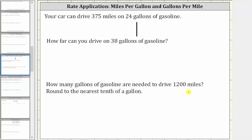Let's go back to the given information and write it as rates. One way to express the given information as a rate is 375 miles per 24 gallons, but we can also express the rate as 24 gallons per 375 miles.